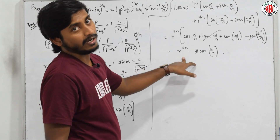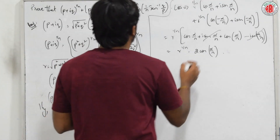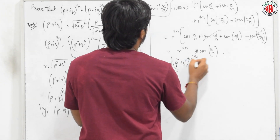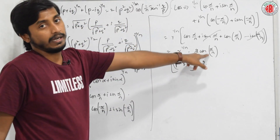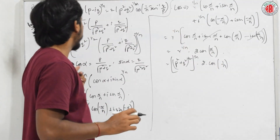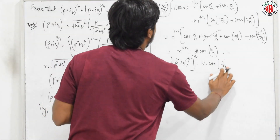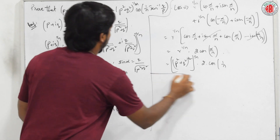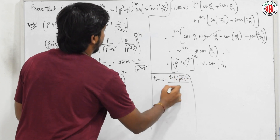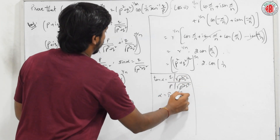Let us convert everything to standard form. Since r = √(p² + q²), r^(1/n) = (p² + q²)^(1/2n). For α: tan α = sin α / cos α = (q / √(p²+q²)) / (p / √(p²+q²)) = q/p, so α = tan⁻¹(q/p).